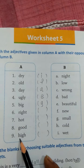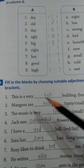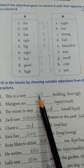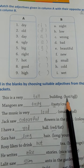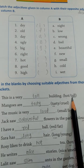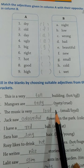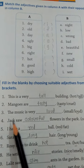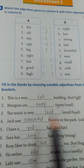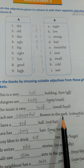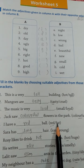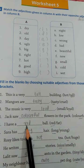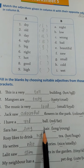You have to write these four words. Then number B: Fill in the blanks by choosing suitable adjectives from those given in brackets. This is a very dash building — we use adjective 'tall'. Mangoes are — tasty. So we write 'tasty'. Then the music is very small or loud — 'loud'. Jack saw dash flowers in the park — colorful flowers. I have a dash ball — so we write 'red' ball. Sarah has long hair — we use 'long'.